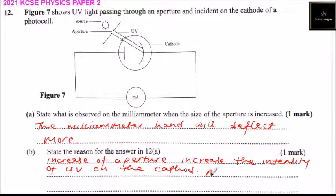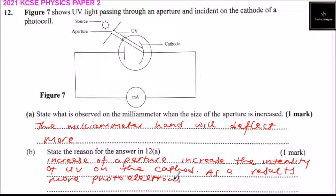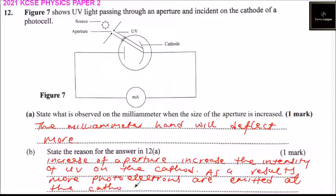More photoelectrons are emitted at the cathode. When more photoelectrons are produced, there will be an increase in the flow of charge, and as a result an increase in current. That is why the millimeter hand will deflect more. By answering that, you get full marks.